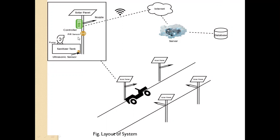There is PIR sensor which is used to turn on or off the nozzle when it detects object in front of that panel or in front of that pole.